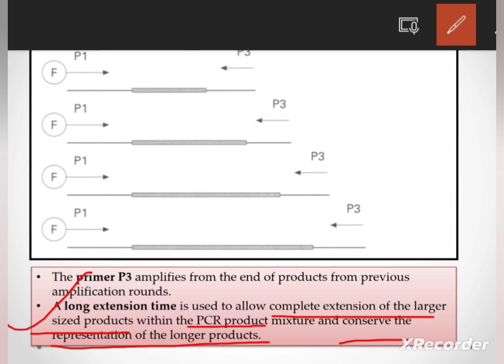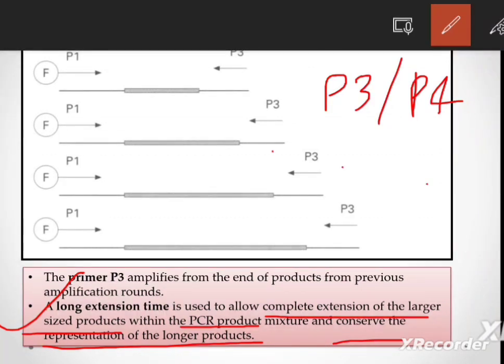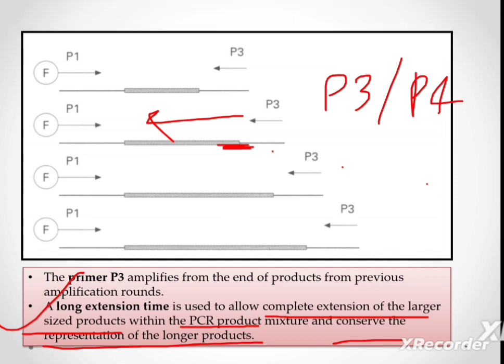Also, an important point is the ratio of P3 to P4. Since we want P4 primer to be incorporated in the initial cycle only, approximately a ten-to-one ratio is taken so that P4 is incorporated in the initial cycle, and P3 can provide the binding site for the template strand to bind and amplify the product which we are going to analyze downstream.